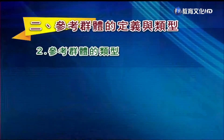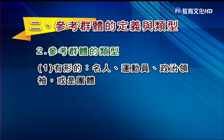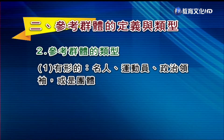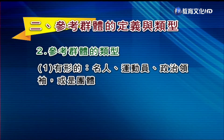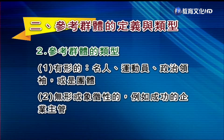由这个观念，我们引出下面要介绍的内容——参考群体。很多新产品的扩散必须借助参考群体的影响力。所谓参考群体，就是任何会影响其他人的价值观、态度、行为与规范的个人或群体。参考群体的类型大概有两类：第一个是有形的，也就是名人，包括歌星、影视歌星、运动员、政治领袖或慈善团体等。